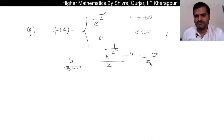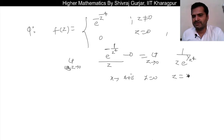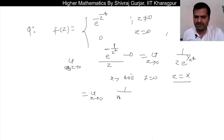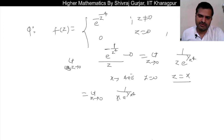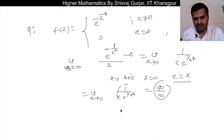This is limit z tends to 0 of 1/(z · e^(1/z⁴)). If we go along the x-axis, z becomes x, so this limit becomes limit x→0 of 1/(x · e^(1/x⁴)). When x→0, 1/x → ∞ and e^(1/x⁴) → ∞, giving us the ∞/∞ indeterminate form, so we can use L'Hôpital's rule.